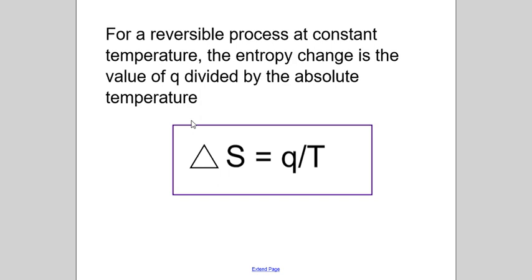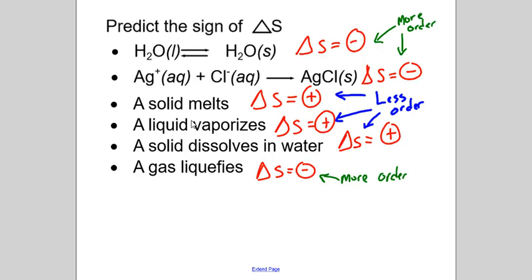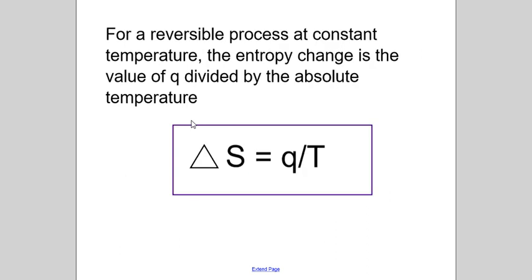Okay, just messing with you guys. No, but going back. The first two should be negative because you're going from liquid to solid, aqueous to solid. Next three are all positive because you're going from less ordered systems and then the last one is negative.